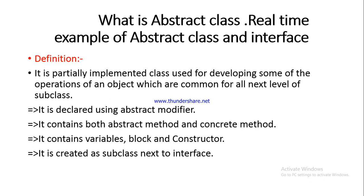I will also cover a real-time example of abstract class and interface. According to the definition, an abstract class is a partially implemented class — used for developing some of the operations of an object which are common for all next-level subclasses. The meaning of 'operation' here relates to how you declare requirements using abstract methods. Which implementations are common for all subclasses will become clear with an example.